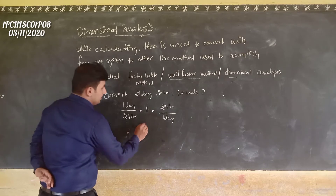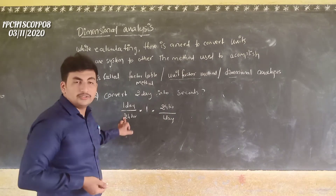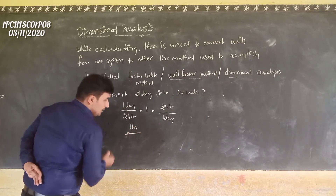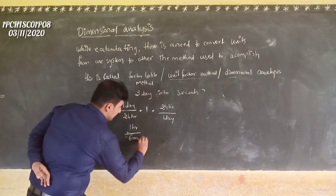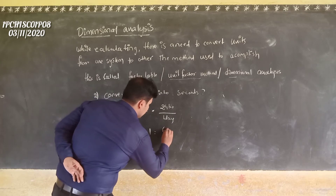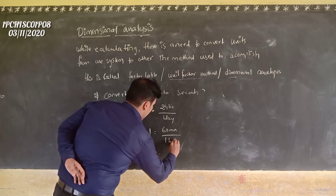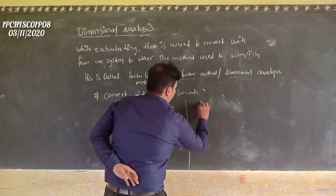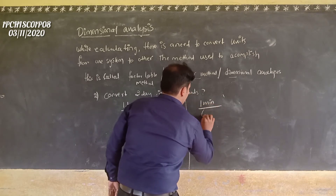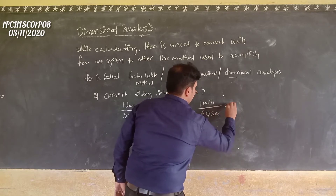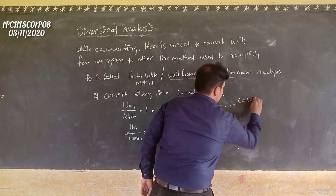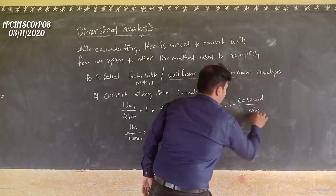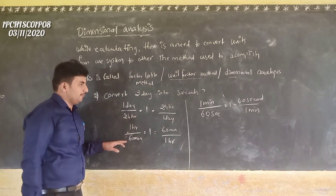Then, 2 days is 48 hours. Next relation: 1 hour is equal to 60 minutes, that is equal to 1. So, 60 minutes divided by 1 hour equals 1. And 1 minute is equal to 60 seconds, that is equal to 1. So 60 seconds divided by 1 minute equals 1. These three relations are all equal to 1.